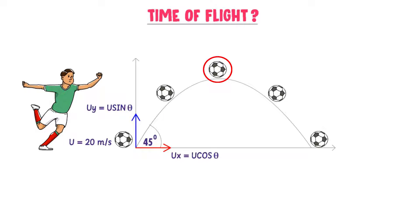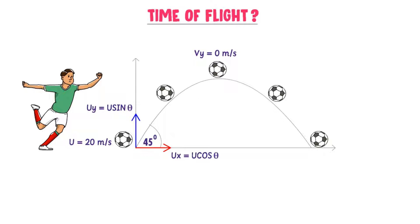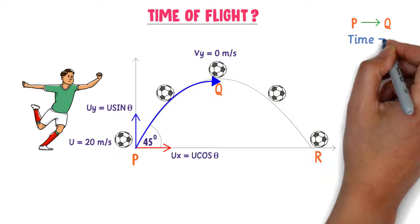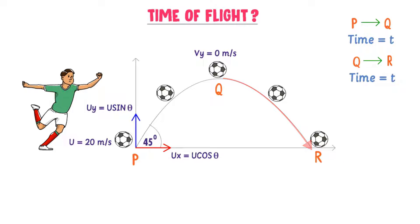We also know that at the maximum height, the y-component of velocity in the vertical direction becomes zero. Let me divide the whole motion of the ball into parts: P, Q, and R. From P to Q, the ball completes half the motion and takes time t in the upward direction. From Q to R, the ball takes the same time t to complete the downward motion. Thus, the motion of the ball is divided into two equal parts.